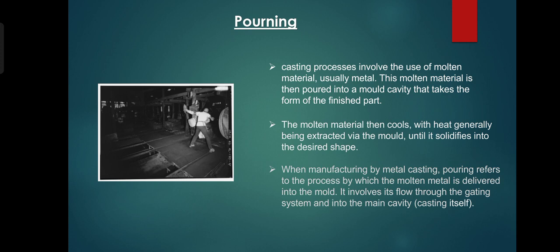After this process, pouring is there. Casting process involves the use of molten material, usually metal. This molten material is poured into the mold cavity that takes the form of the finished part. The preparation of molten metal for casting is referred to simply as melting. The molten metal is transferred to the pouring area where the molds are filled. In this picture, the man shows the pouring of that molten metal.